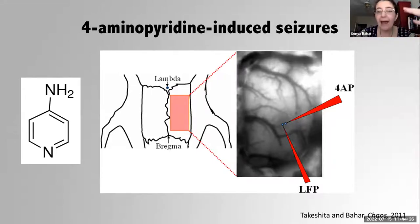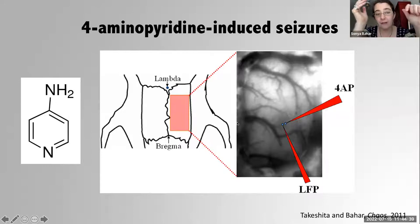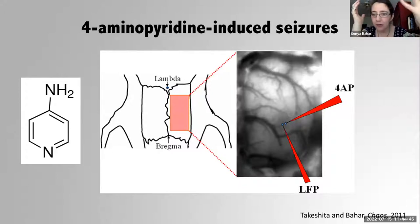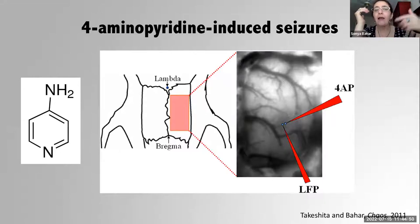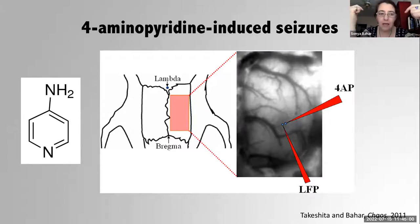We were doing the same type of neocortical seizures you saw in the intrinsic optical signal. These seizures are induced by injecting a drug called 4-aminopyridine. One of the things it does is block potassium channels. For people who know the Hodgkin-Huxley model, it's basically blocking the downstroke of action potentials, inhibiting repolarization, and therefore promoting excess neural activity. That's the presumed mechanism by which this drug induces seizures.